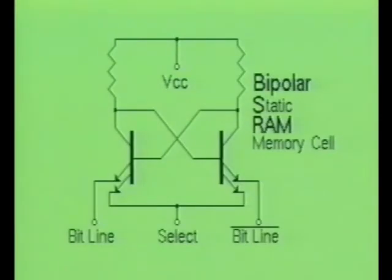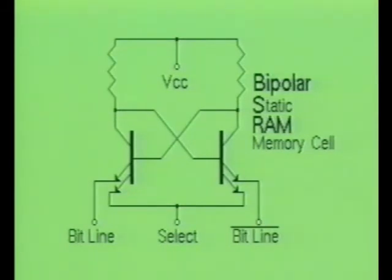Static RAMs are constructed with either bipolar or MOS transistors. The bipolar RAM cell is very fast, with a typical access time of less than 50 nanoseconds. However, their primary disadvantage is that they dissipate relatively large amounts of power — 0.5 milliwatts per bit is not uncommon. This large power consumption is due to the flip-flop circuit, in which one transistor is always saturated.